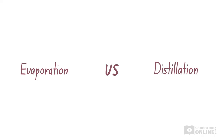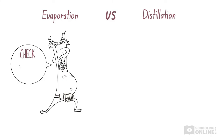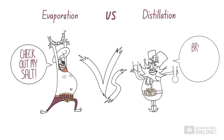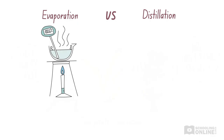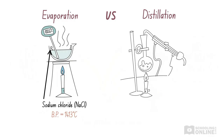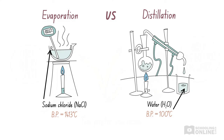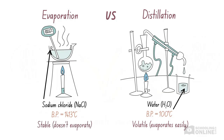Let's compare evaporation and distillation. When Cookie evaporated seawater, he was left with salt crystals. When Blackbeard distilled seawater, he obtained both salt crystals and liquid water. Both processes caused water to change state from liquid to gas. Cookie let the water vapour escape because he only wanted to collect the salt. Blackbeard's goal was to collect pure water, so he passed the water vapour through a condenser and cooled it back into a liquid. In general, we use distillation if we want to collect the more volatile substance — the one with a lower boiling point. We use evaporation if we only want to collect the more stable substance, or the substance that doesn't evaporate.